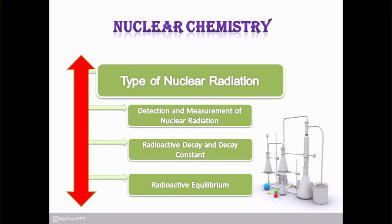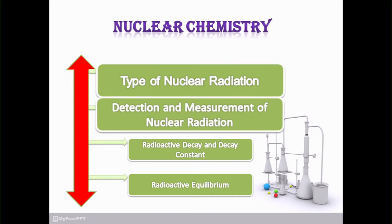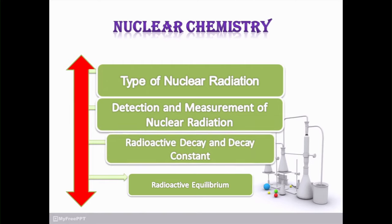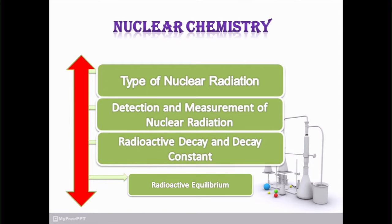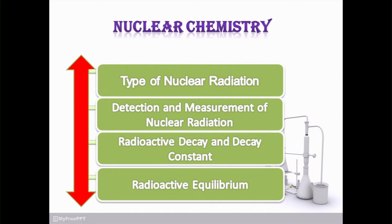It consists of alpha, beta, gamma. Then detection and measurement of nuclear radiation, then radioactivity, radioactivity decay and decay constant, radioactive equilibrium. This is under the heading of nuclear chemistry.